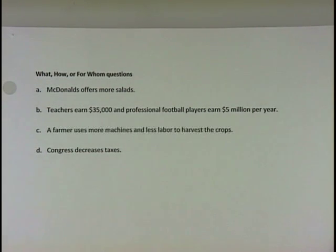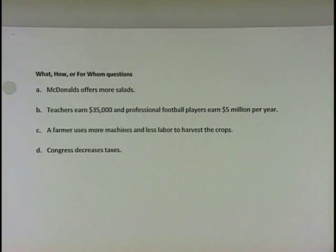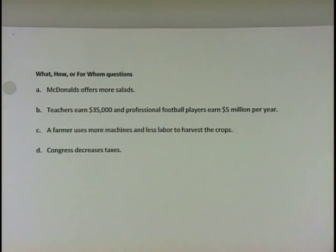A 'what' question deals with what to produce. A 'how' question tells us the difference between using labor, which is people, and capital, which is machines, tools, and equipment. And then 'for whom' — anything that deals with income and how much money we get left over after taxes — because the more income we have, the more stuff we can purchase.